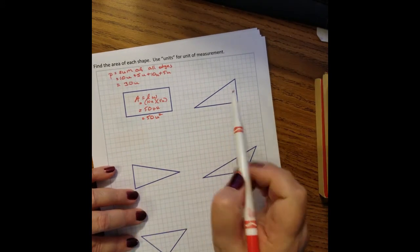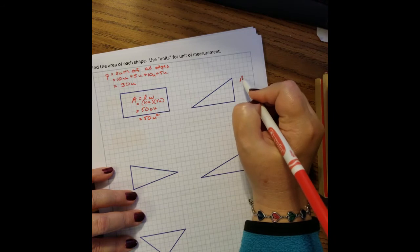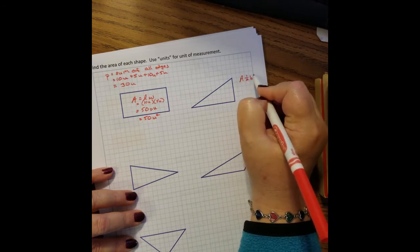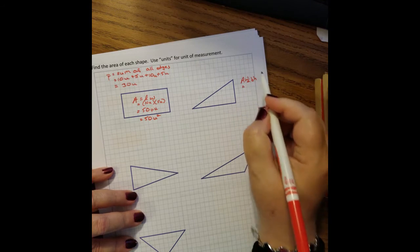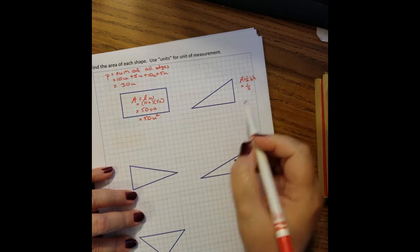Now the triangle is going to be, the area is going to be one half base times height. And I like this one because we have one half of the base.